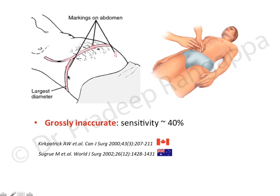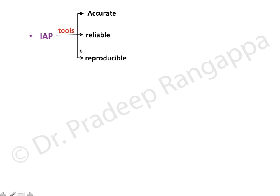Some people monitor intra-abdominal pressure by measuring abdominal girth, but this is obsolete. Clinical examination, abdominal girth measurement, palpation, and percussion as tools to identify abdominal compartment syndrome should be abandoned. Studies have shown the sensitivity is only 40%, making it grossly inaccurate.